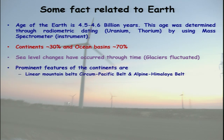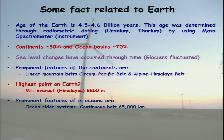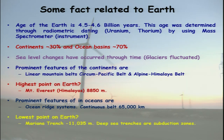The prominent features seen because of plate tectonics are the linear mountain belts — the circum-Pacific belt and the Alpine-Himalayan belt, the most prominent on the continent. The highest point on earth is Mount Everest at approximately 8,850 meters. The ocean ridge system continues for almost 65,000 kilometers, and the lowest point on earth is the Mariana Trench at a depth of about 11,035 meters.